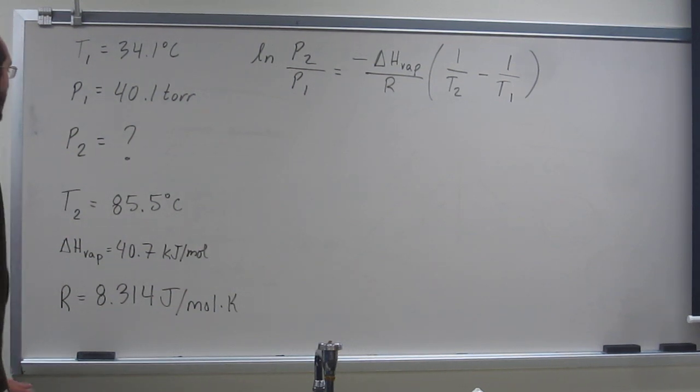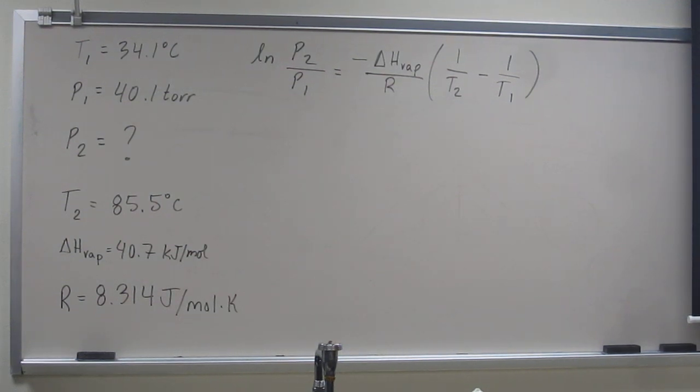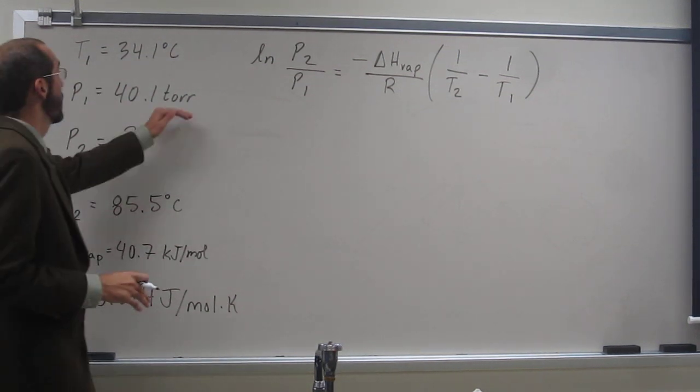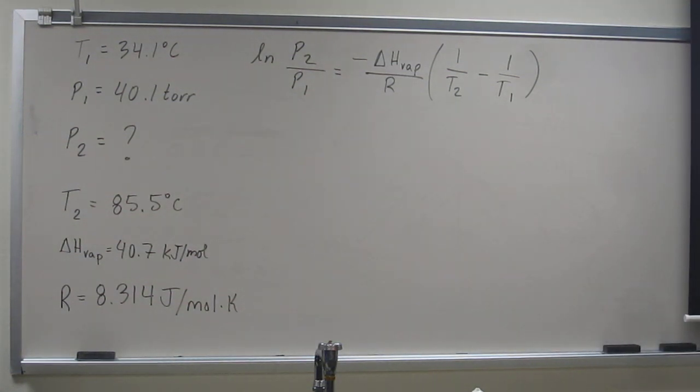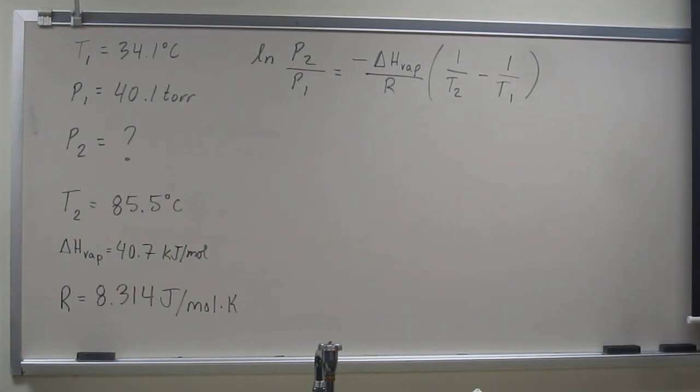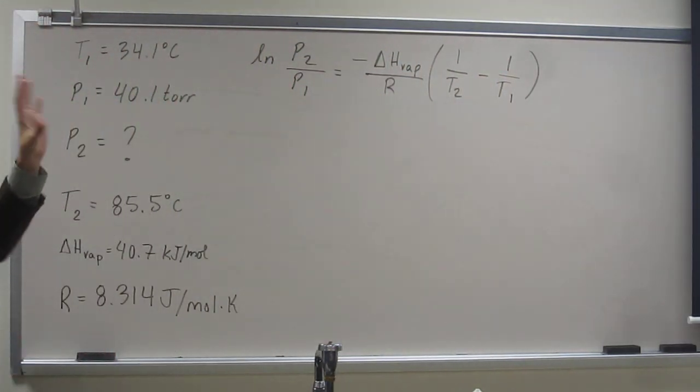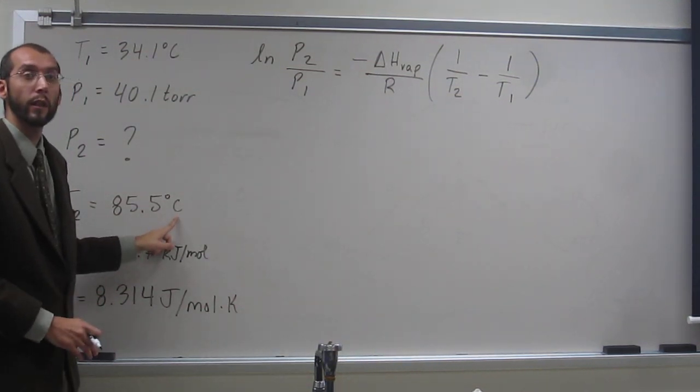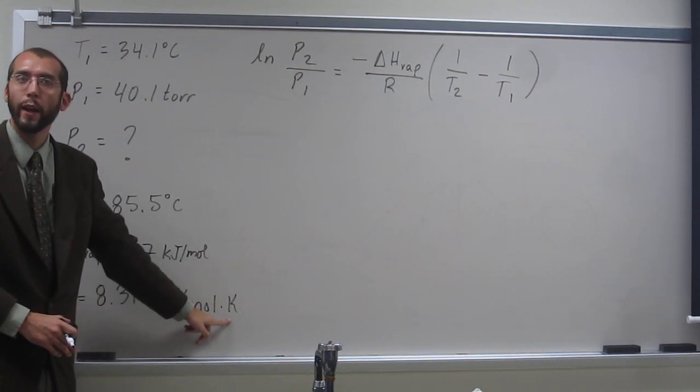So hopefully you guys can see that we need to do some conversions, right? So what do we need to convert? It actually doesn't tell us what vapor pressure units it wants it in, so torr would be fine. But there's something more obvious. Yeah, degrees Celsius, right? How do I know I've got to convert that to Kelvin? Because Kelvin's down here, we've got to cancel that out.